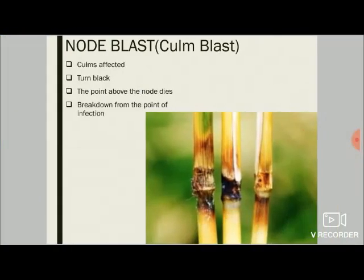The next symptom is node blast, also called curl blast. The culms are first affected, appearing reddish-brown in color, and in later stages the spots become black. Some mycelial structures can also be seen around the node. The fungus enters the portion of the node and blocks the xylem and phloem vessels of the plant. As these vessels are blocked, nutrient and water supply to the part above the node is cut off, so the above part dies and the culm breaks down — consequently, the plant dies.